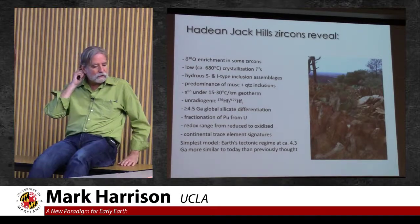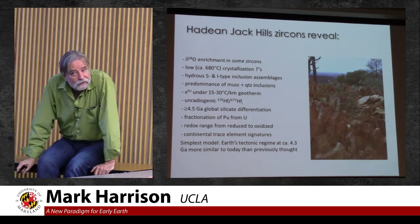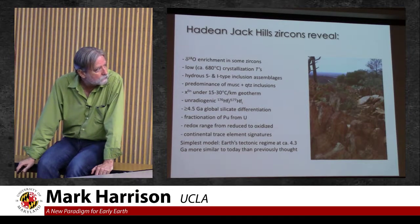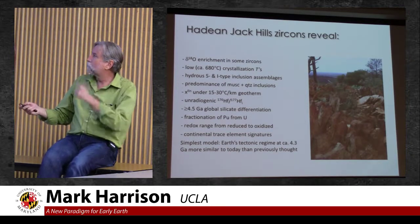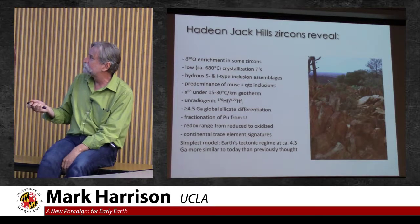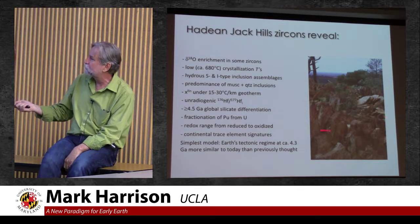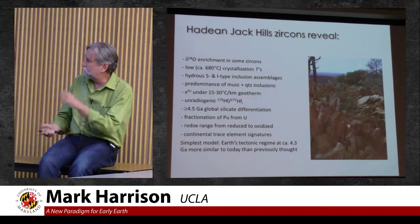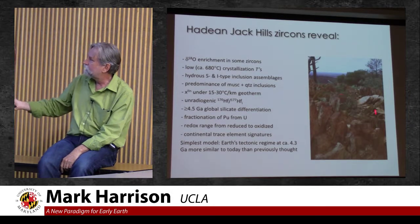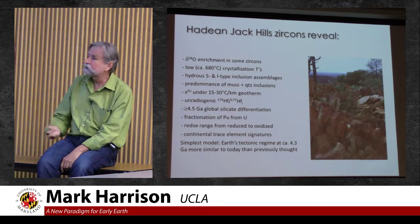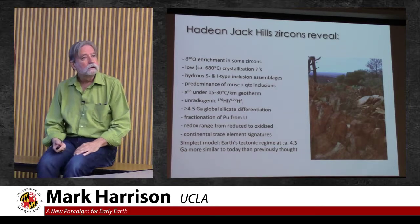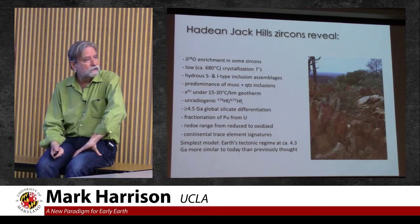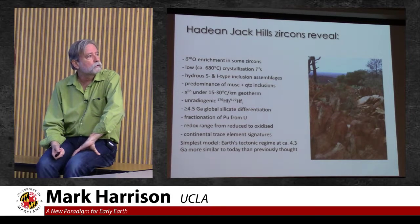I'm going to race through what we've learned in the past 15 years from these old zircons. Here's the outcrop in Jack Hills, Murchison District of Western Australia. These are 3 billion year old quartzites; of the detrital zircon population in these rocks, about 2% yield ages older than 4 billion years, and they get as old as virtually 4.4 billion years.